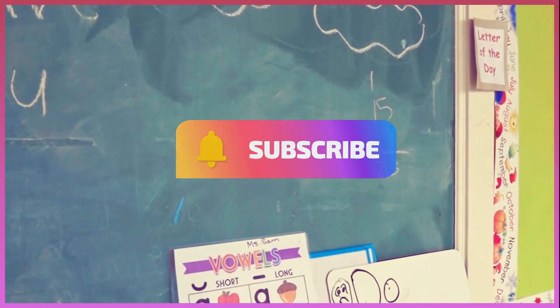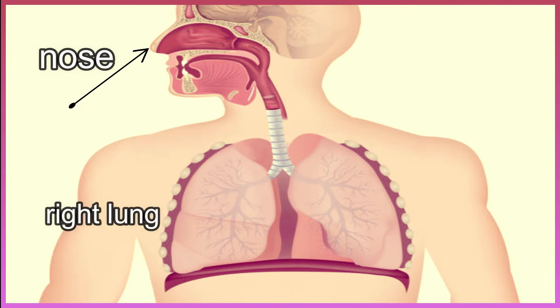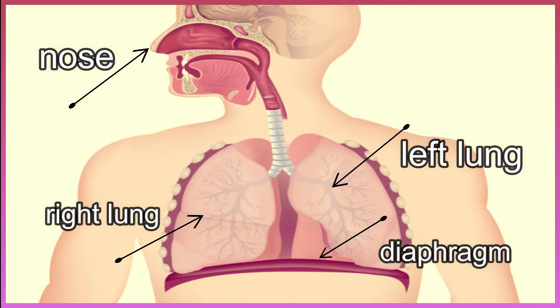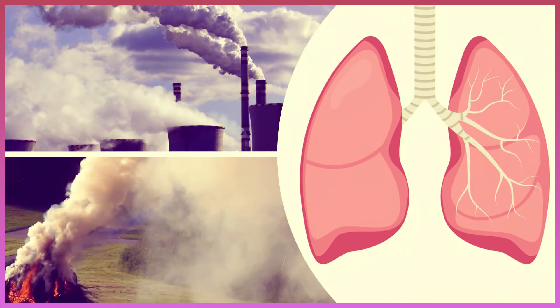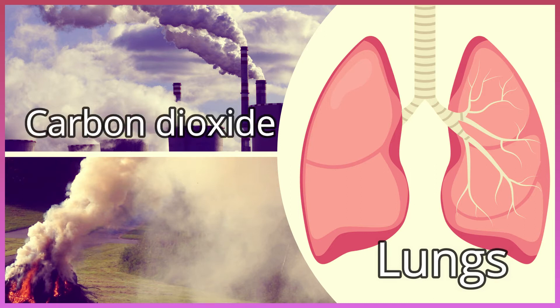Vocabulary unit 1, lesson 2, part 2. Listen and repeat the key vocabulary of the respiratory system: nose, right lung, left lung, diaphragm. Listen and repeat the key vocabulary: lungs, carbon dioxide.